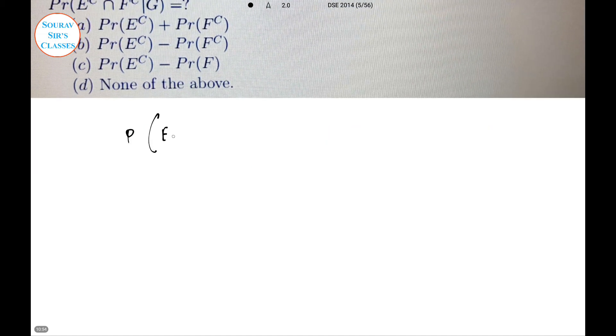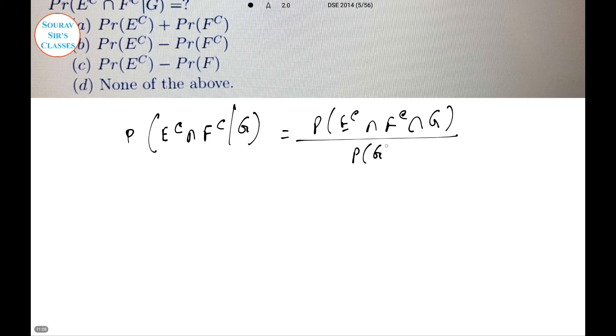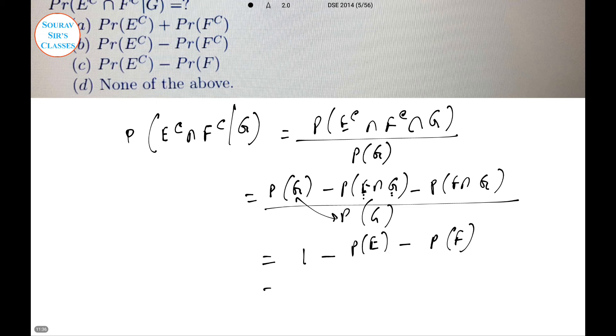Here we will solve it: probability of E complement intersection F complement given G equals probability of E complement intersection F complement intersection G divided by P of G. Then applying the formula, probability of G minus E intersection G minus F intersection G all over G. Splitting it, 1 by this. Remember that these two are independent of each other, so we end up with P of E only and here P of F. Simply this can be written as 1 minus P of E minus P of F.